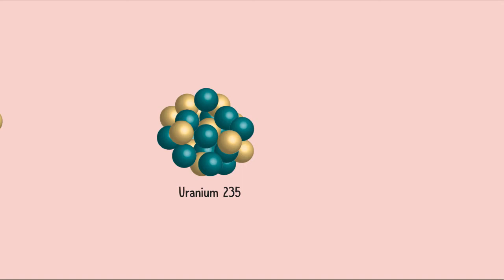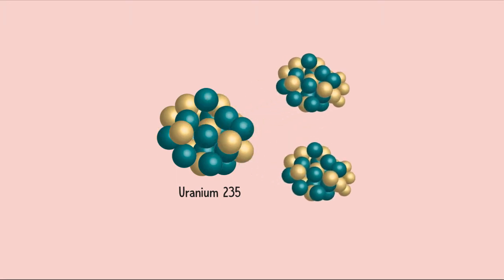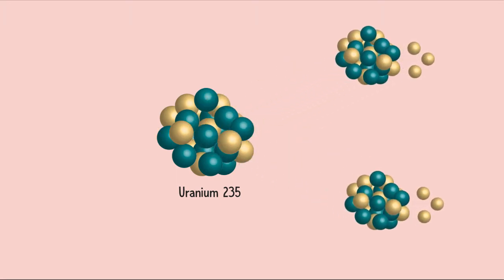In the case of uranium-235, when the nucleus of this atom is bombarded with a neutron, the nucleus of uranium splits into two large nuclei of barium and krypton. This process releases two more neutrons in addition to the first neutron which was used to hit the uranium nucleus. This process releases enormous energy.